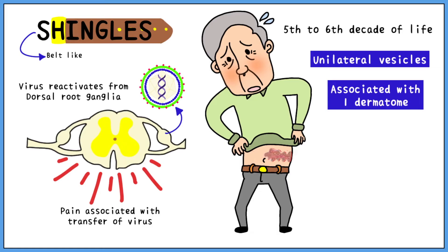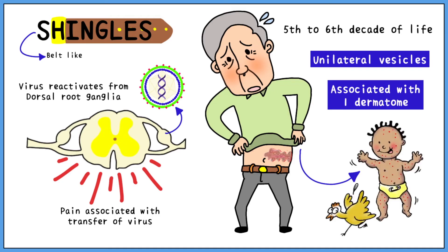Shingles is characterized by a belt-like rash associated with only one dermatome — that is, an area supplied by a single spinal nerve. It can be seen on the waist, shoulder, back, face, or anywhere else. Remember, you can only get shingles if you have had chickenpox before. Shingles might be a latent form of the disease, but it is still contagious. If an individual comes in contact with someone who hasn't been infected before and isn't vaccinated, that person will get chickenpox, not shingles.